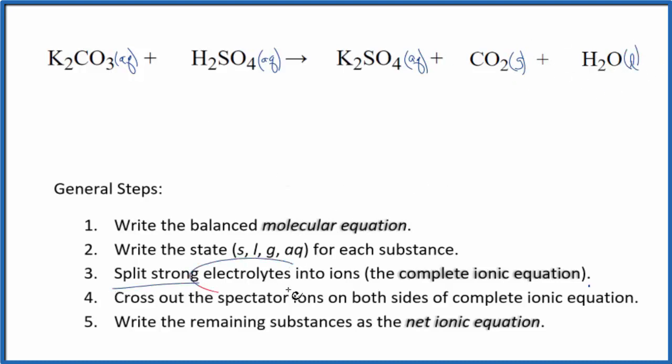Now we can split the strong electrolytes into their ions for the complete ionic equation. So potassium carbonate. Potassium's in group 1 on the periodic table. It'll have a plus 1 ionic charge and the whole carbonate. That's always 2 minus.